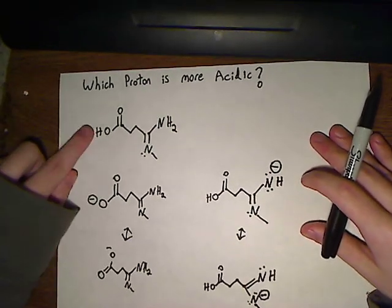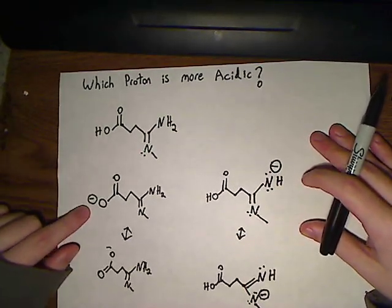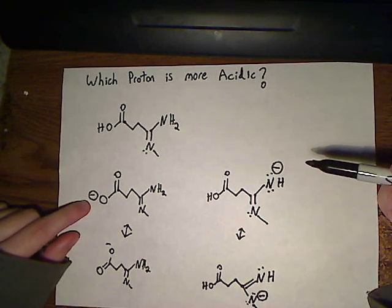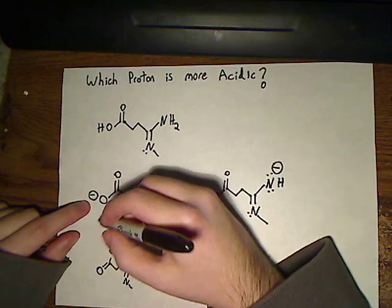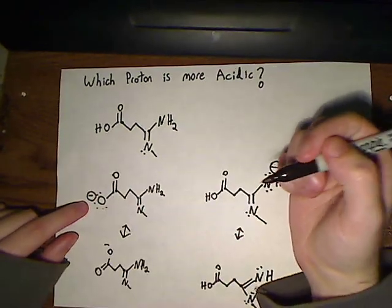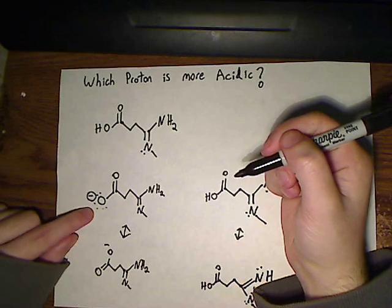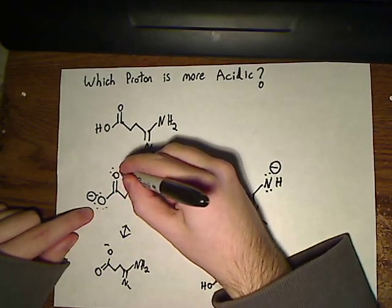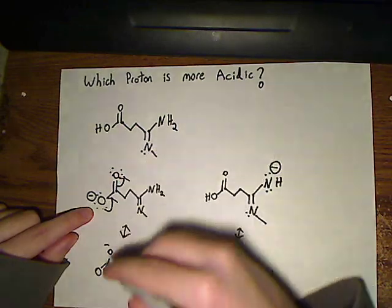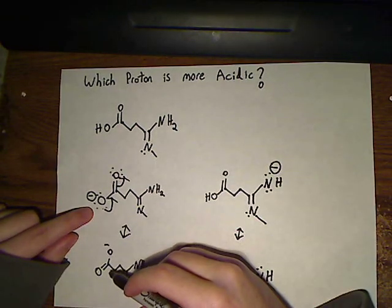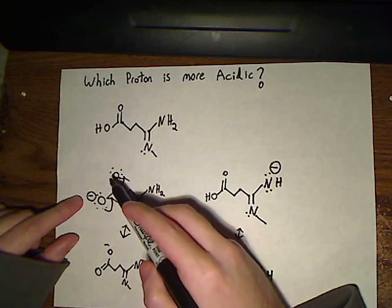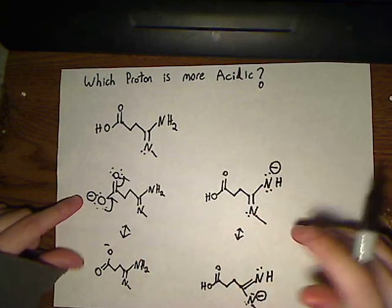We're going to start with this proton right here and draw the conjugate base. Right away you know that's going to pick up a negative charge, and you should be able to recognize that there's going to be a resonance structure here. We're going to bring in one of these lone pairs and then kick it out to create this resonance structure. So you have one negative charge split between two oxygen atoms, which is relatively stable.